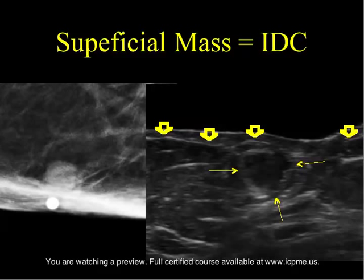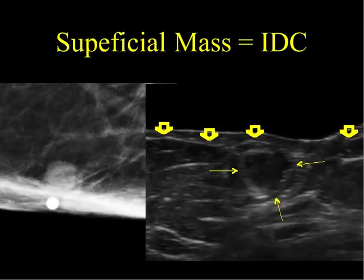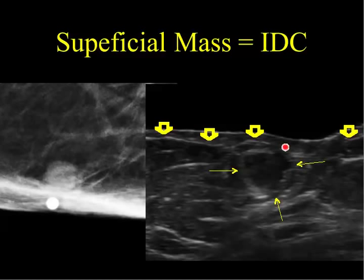Why is that important? As in the last case, we know that's an inflammatory process confined to the skin. Here on a magnified mammogram, we see a superficial mass very close to the skin line. And on the accompanying ultrasound image, also using a standoff pad, we can clearly see the skin line and recognize that this heterogeneous hypoechoic mass with an echogenic margin is below the skin. In fact, this was a small invasive ductal carcinoma.